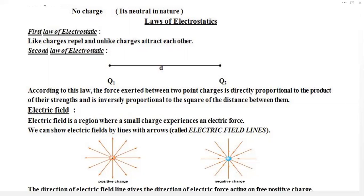This is the first law of electrostatics. Now I am going to discuss the second law of electrostatics. In the second law, if we have two charges — either like or unlike — the force of attraction or force of repulsion will be proportional to the charges.